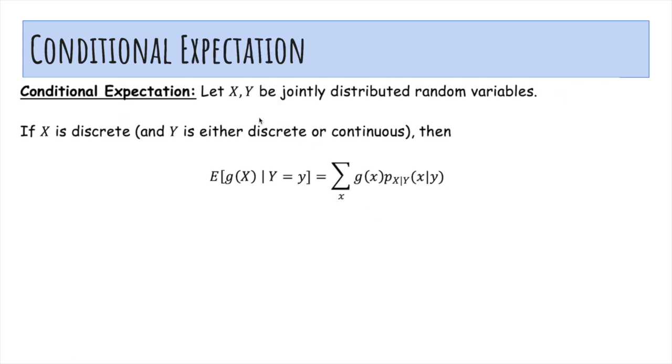Now, conditional expectation. So if X and Y are jointly distributed random variables, if X is discrete and Y is discrete or continuous, then if I want to find the expected value of g(X) given that Y equals a particular value, then I'm just going to use the same formula as before.